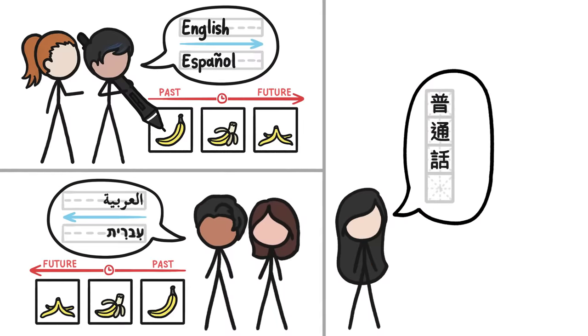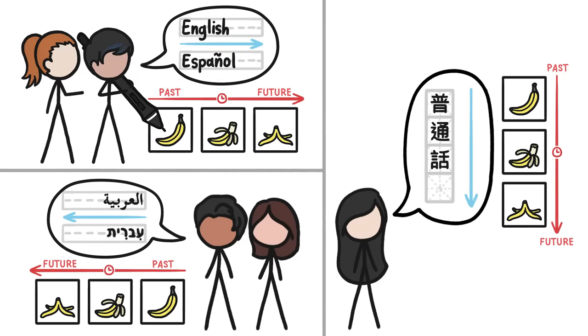And native speakers of Mandarin, a language that traditionally flows downwards on the page, are likely to lay out the pictures from top to bottom, bucking the horizontal trend altogether.